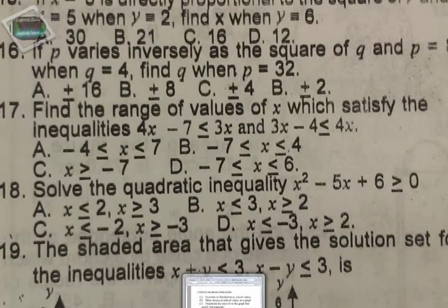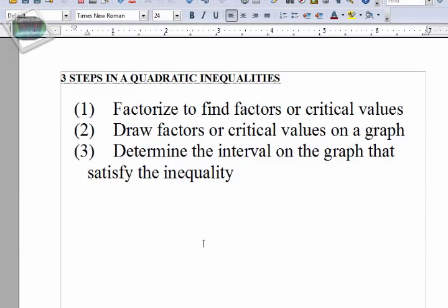The steps are: one, you have to factorize the quadratic equation to find the factors or critical values. Then, based on the critical values or factors you get in step one, you draw a graph. From the graph, you will be able to determine the interval that satisfies the quadratic inequality.